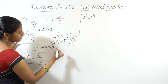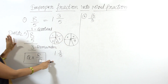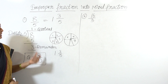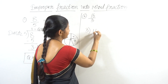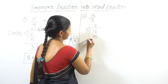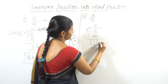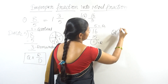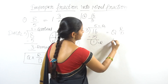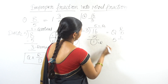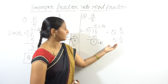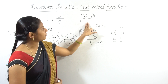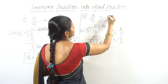Same answer — so improper fraction to mixed fraction using quotient, remainder by divisor. For 16 by 3: 3 goes into 16 five times (3 × 5 = 15), remainder is 1. Quotient is 5, remainder is 1, divisor is 3. So 16 by 3 equals 5 and 1 by 3.